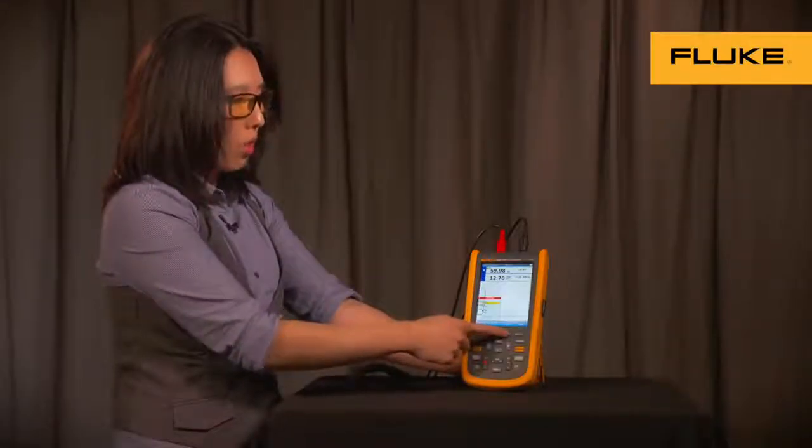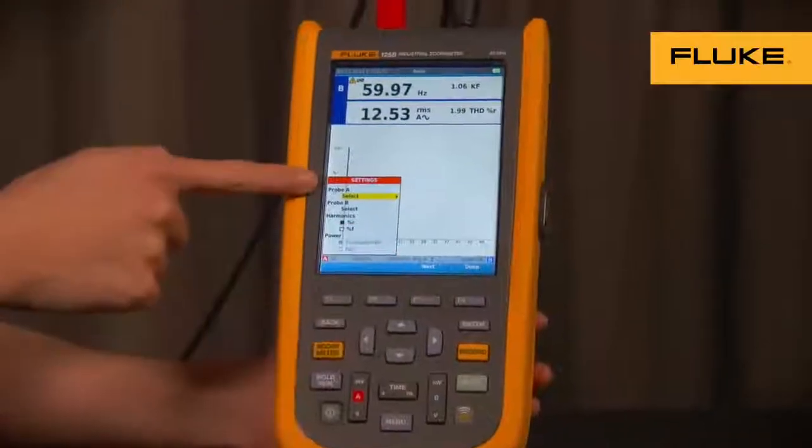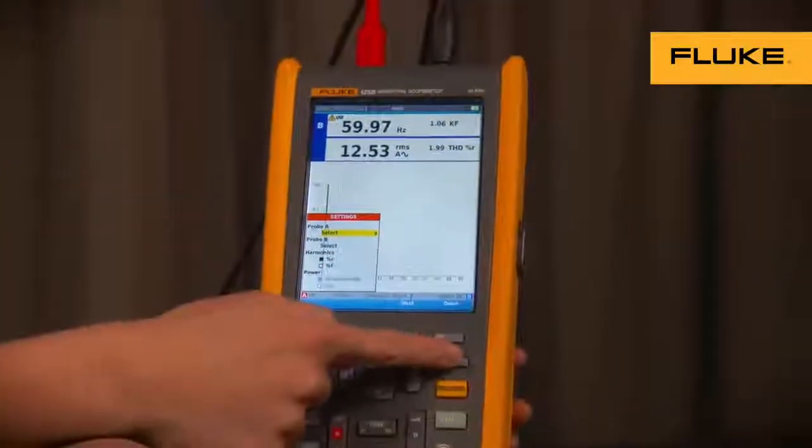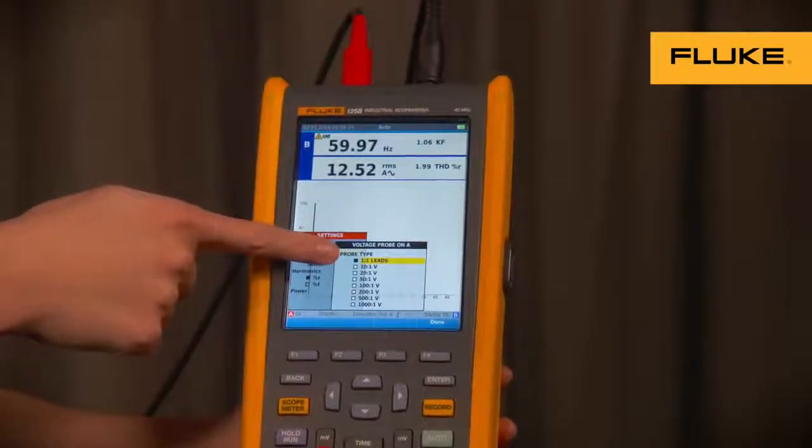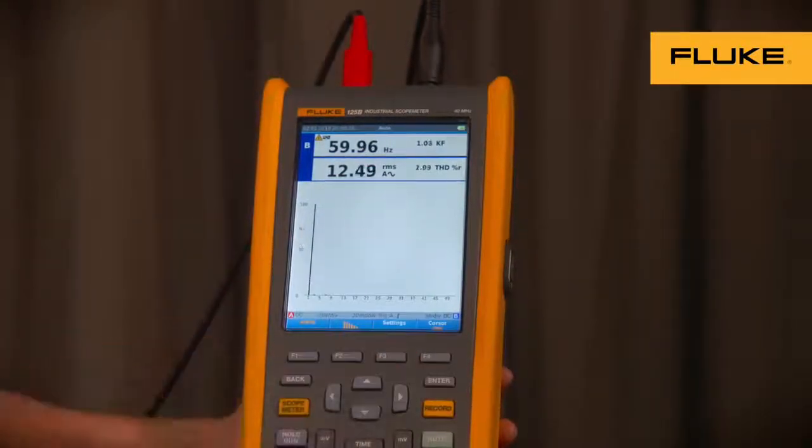You also need to make sure your settings are right. Press F3 for your voltage probe, probe A or channel A. Press the Enter key. In this case, we have the 1 to 1 test lead, which is the STL120. Press Enter.